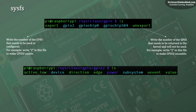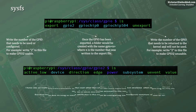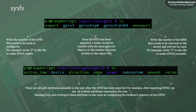Once you cd into the GPIO2 folder, you will see a number of items, out of which the attributes of interest to us are active_low, direction, edge, and value. This is very similar to what we do with other embedded systems also.